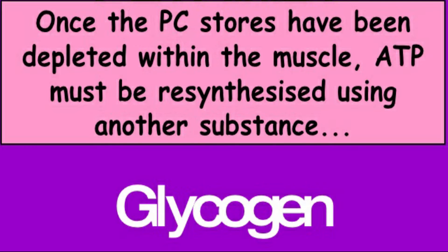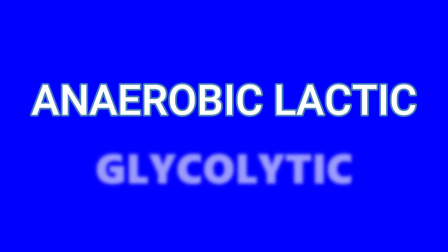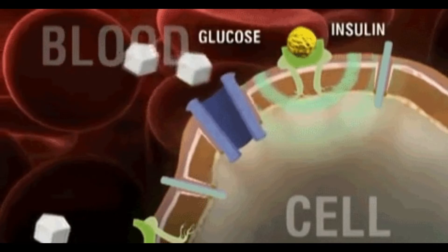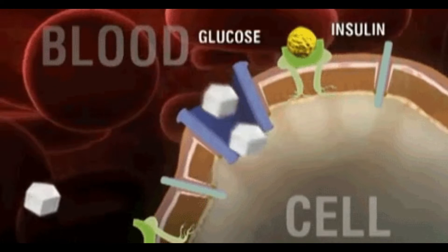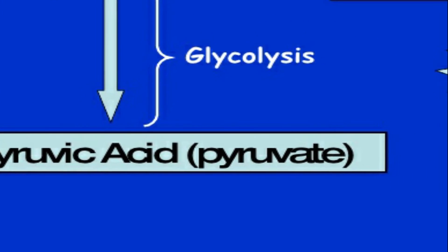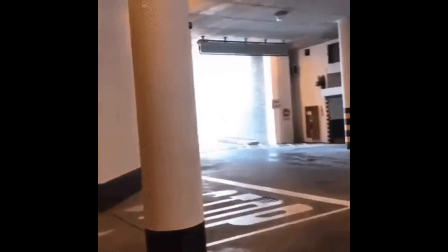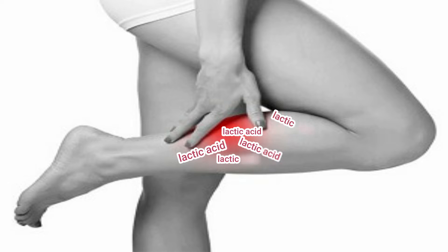Once the PC stores have been depleted within the muscle, ATP must be resynthesized using another substance. Anaerobic lactic is also known as the glycolytic energy system. It utilizes carbohydrates broken down into glucose, then into pyruvate, called glycolysis, to produce ATP. It supplies energy for medium to high-intensity physical activities. These high-intensity activities usually last from 10 seconds to 2 minutes, but it has a byproduct called lactic acid that leads to muscle fatigue.